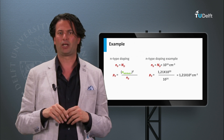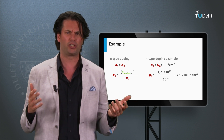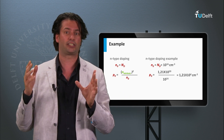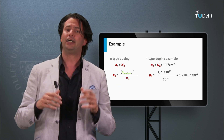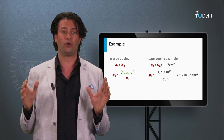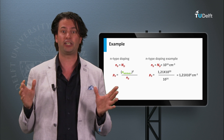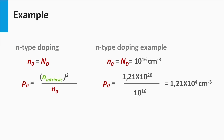Let's take an example. We incorporate 10 to the 16 per cubic centimeter phosphorus atoms in the lattice — in other words, we have a donor density n_d of 10 to the 16 per cubic centimeter. As we assume that all donors give a free electron to the lattice, the electron density n_0 is equal to the donor density n_d. Now we can calculate the hole density p_0: p_0 is equal to 1.21 times 10 to the 20 divided by 10 to the 16, giving a hole density of 1.12 times 10 to the 4 per cubic centimeter.